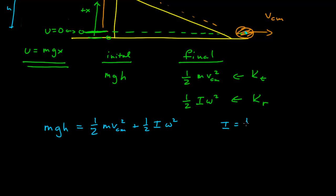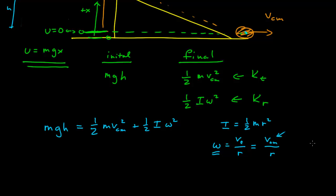We know I for a solid disk is one-half m times the radius squared. We also know that omega equals v_tangential divided by the radius of the object. And when rolling without slipping on a flat surface — which is what we're assuming — the tangential velocity of a point at the edge of the rotating object equals the center of mass velocity. So all of that — the rolling without slipping condition — comes into play to relate the angular velocity with the center of mass velocity when it reaches the bottom.